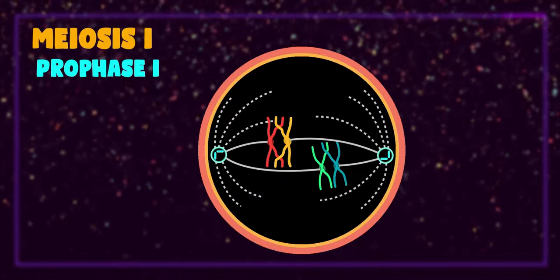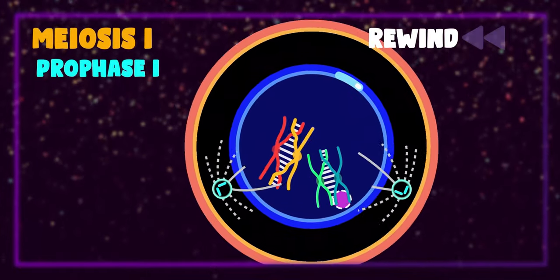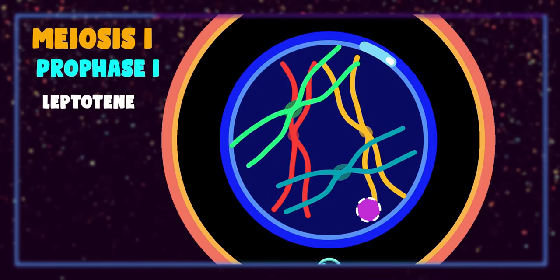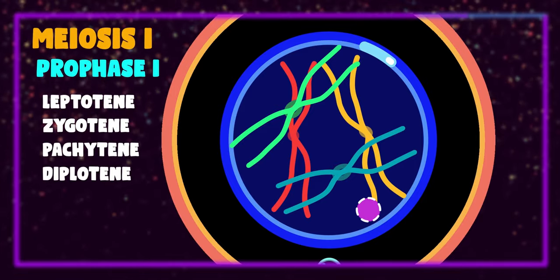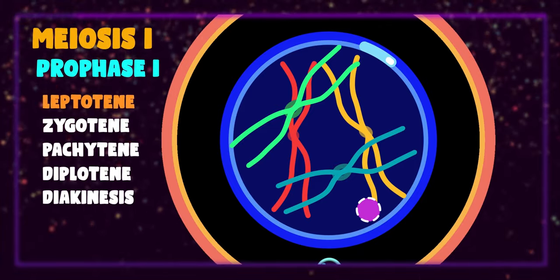But the changes inside the nucleus make prophase one the most complex phase of entire meiosis. So now let's see the changes inside the nucleus. For the ease of study, prophase one is divided into five sub-stages which are leptotene, zygotene, pachytene, diplotene, and diakinesis.